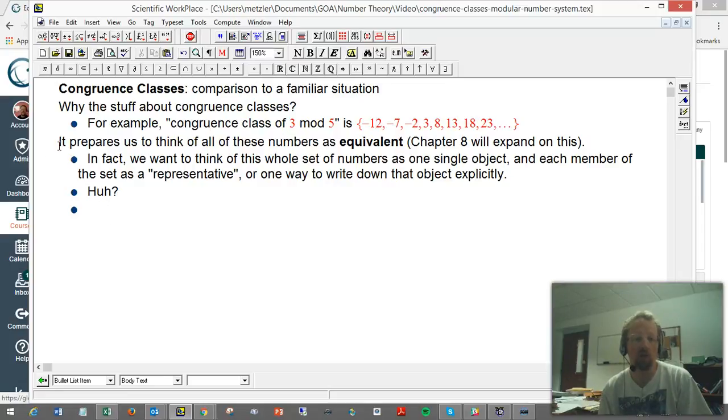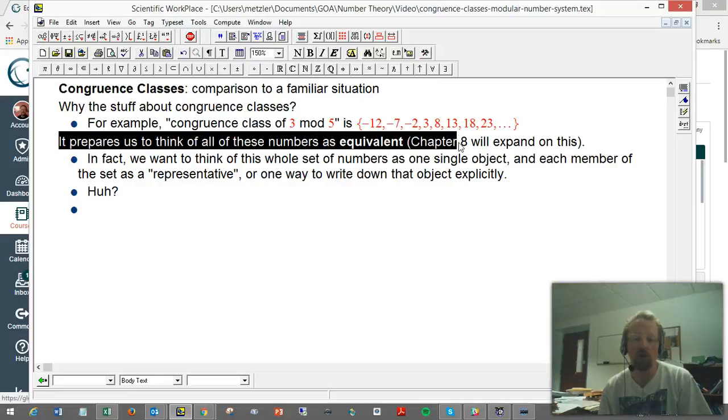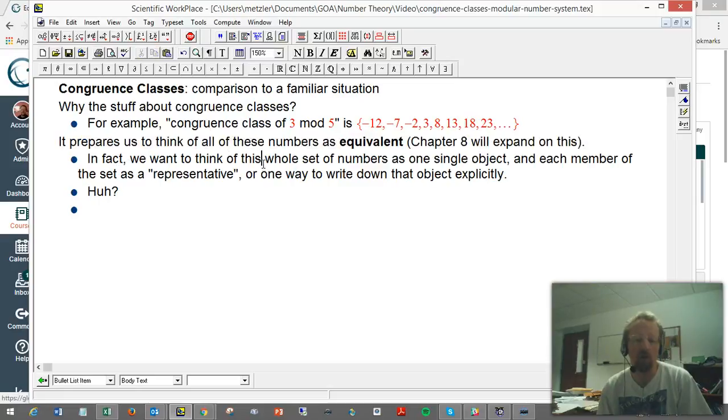Here's one reason to do that, and we'll really see it come into its own in chapter 8. We want to think of all these numbers as basically equivalent to each other in the mod 5 world, like on the planet where people think mod 5, to use the ideas of the myth that they start the chapter with. And we want to even go a little further than that, and we want to really think of this whole set of numbers as one single object in this world of mod 5.